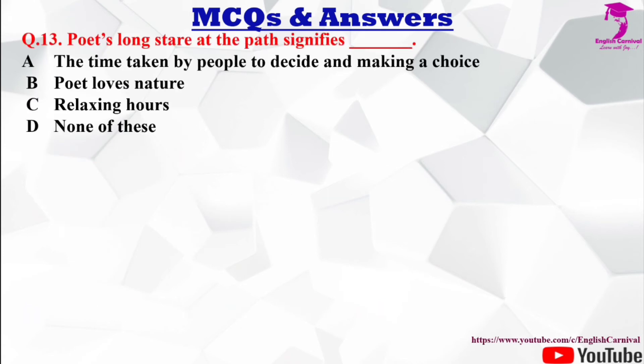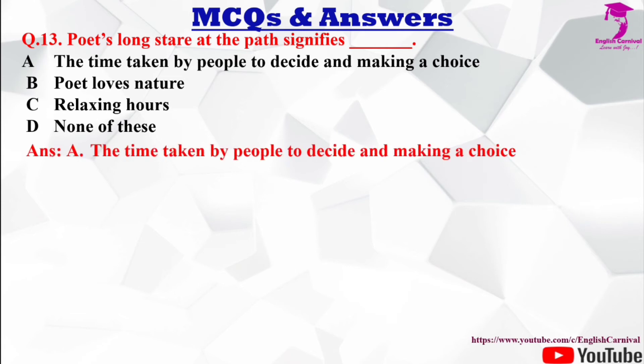Question number 13: The poet's long stare at the path signifies ___. Options: A) the time taken by people to decide and make a choice, B) poet loves nature, C) relaxing hours, D) none of these. The correct answer is A — the time taken by people to decide and make a choice.